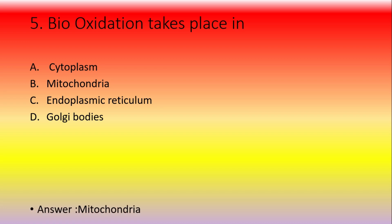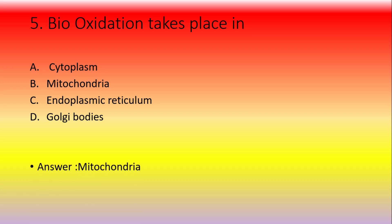The site of bio-oxidation — option includes Golgi bodies — but the answer is mitochondria. Bio-oxidation means biological oxidation or the electron transport chain. The production of energy (ATP) in the human body or cell is carried out in the mitochondria.